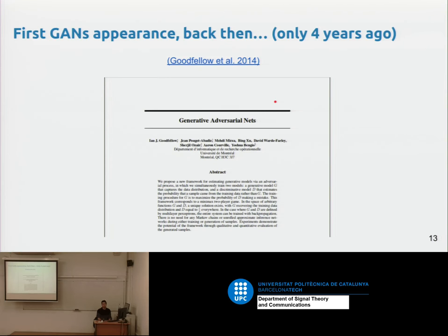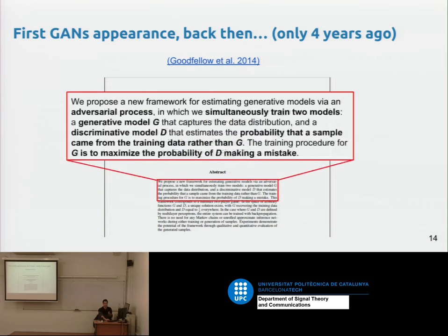A generative model G that captures the data distribution, and a discriminative model D that estimates the probability that a sample came from the training data rather than G. The training procedure for G is to maximize the probability of D making a mistake. So two networks — generative and adversarial — working together adversarially.